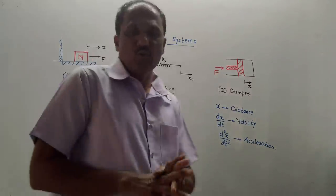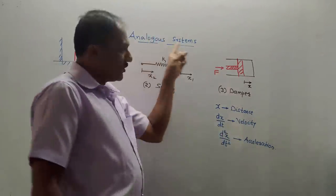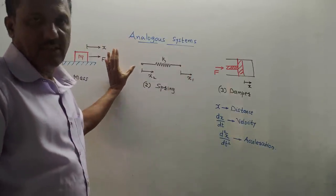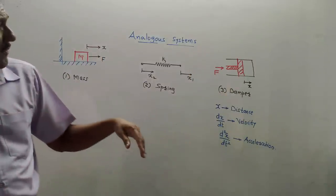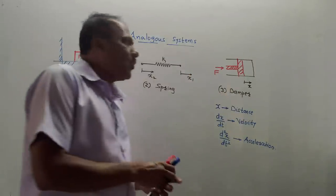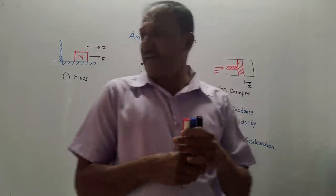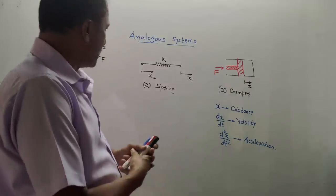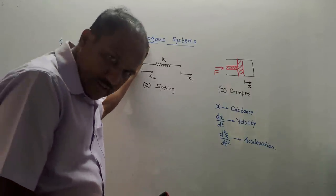Hello and welcome, dear students. Today's topic is analogous systems, from the subject control systems for second year ENT students. Earlier I created a video related to open loop and closed loop systems. If you haven't watched that video, do watch it — I will provide the link in the description box. Presently we are talking about analogous systems.